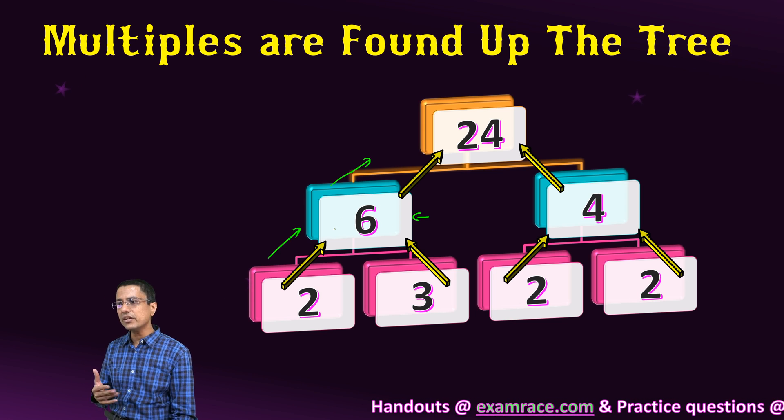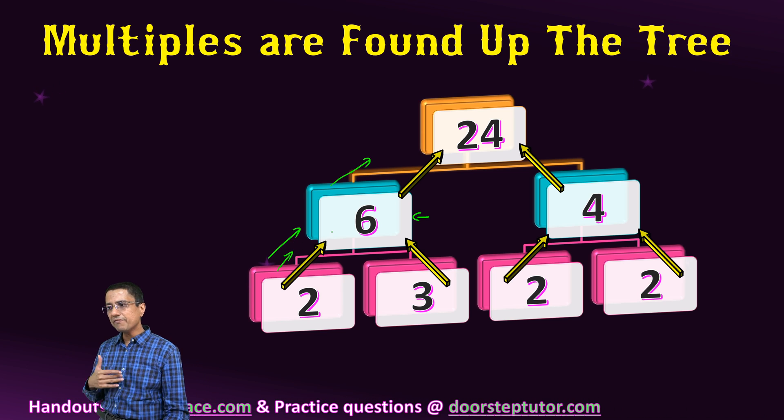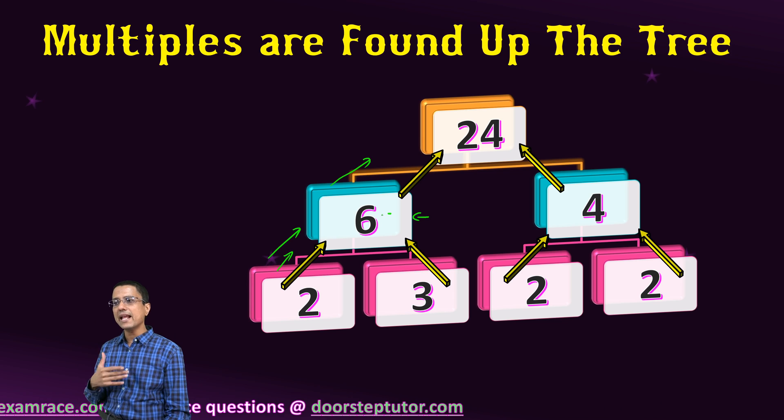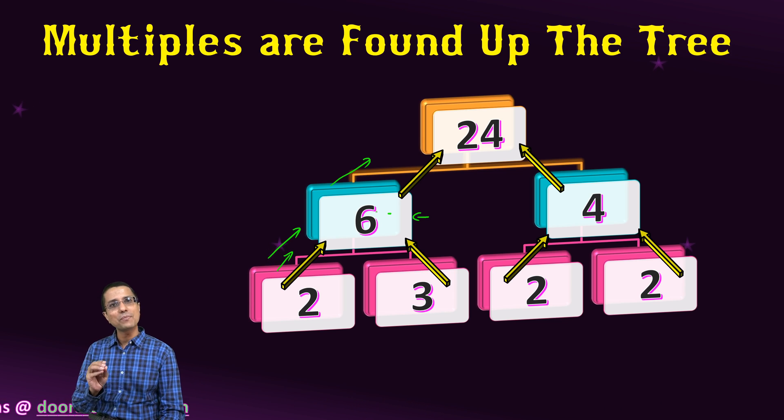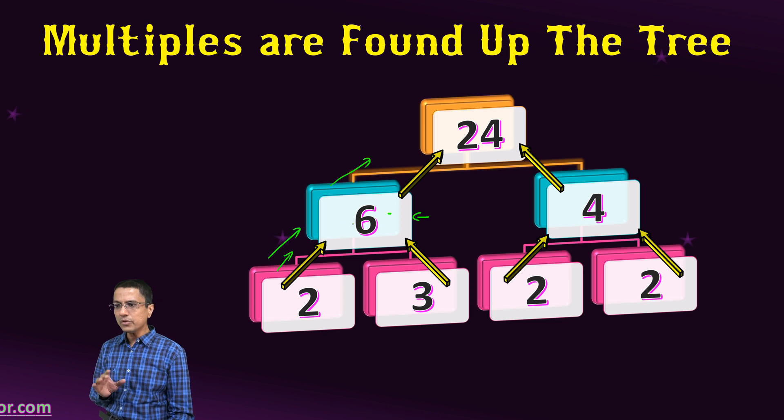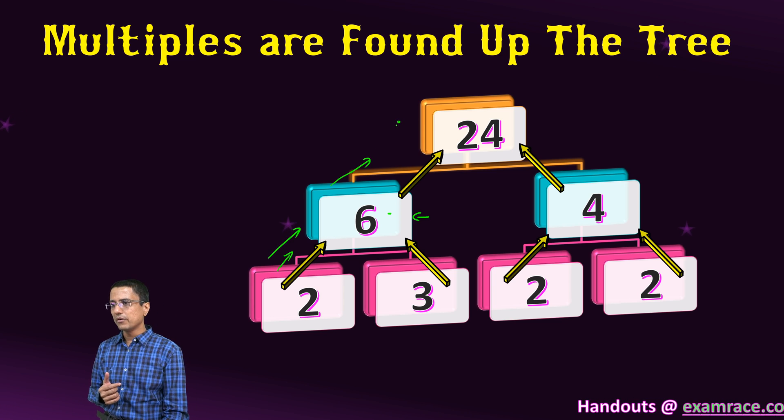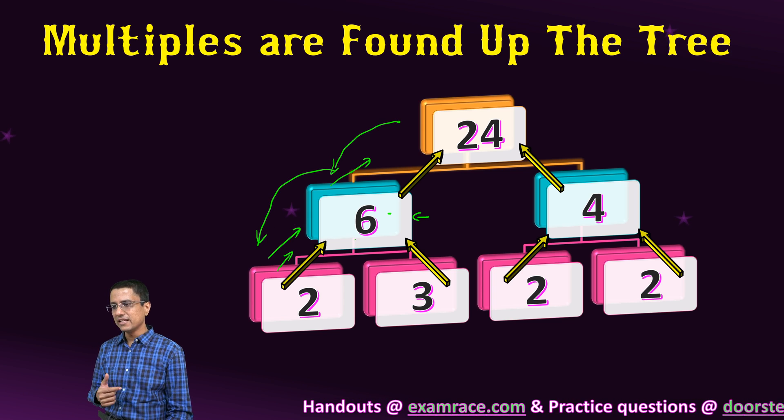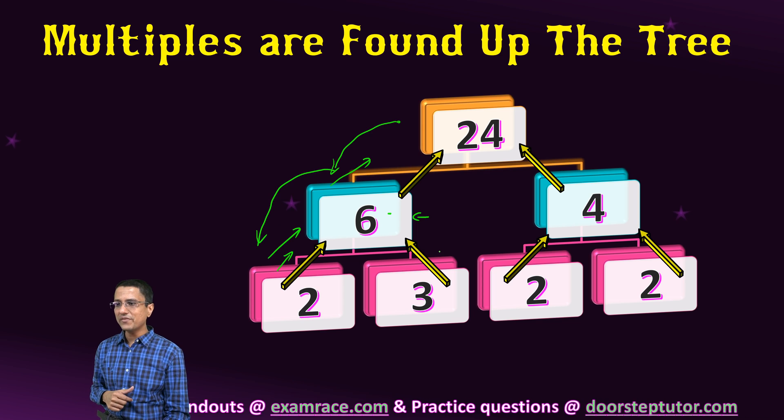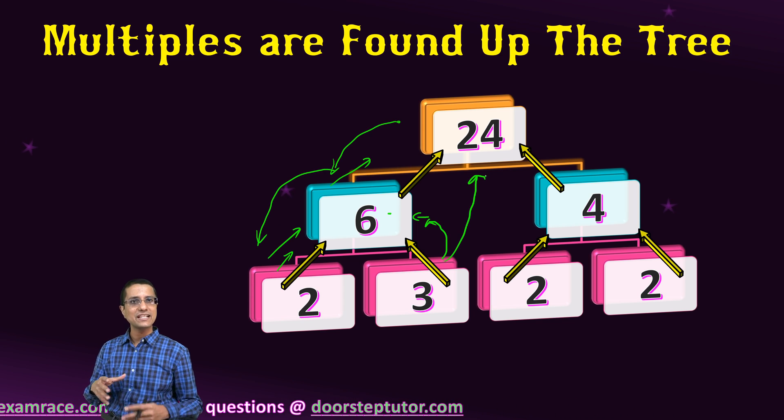It is not that if I go up from 2, I will find all the multiples of 2. That is not the case. But if I am going up, definitely the number where I'll end up would definitely be a multiple of 2. So from here, we have the relation. This is the root. Root has children and then grandchildren. Similarly, from the bottom, we have the relationship of parent and grandparent and so on and so forth.